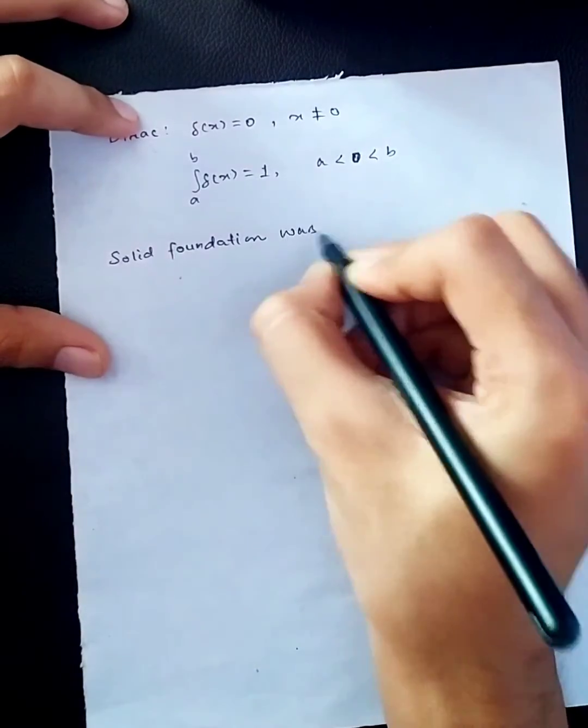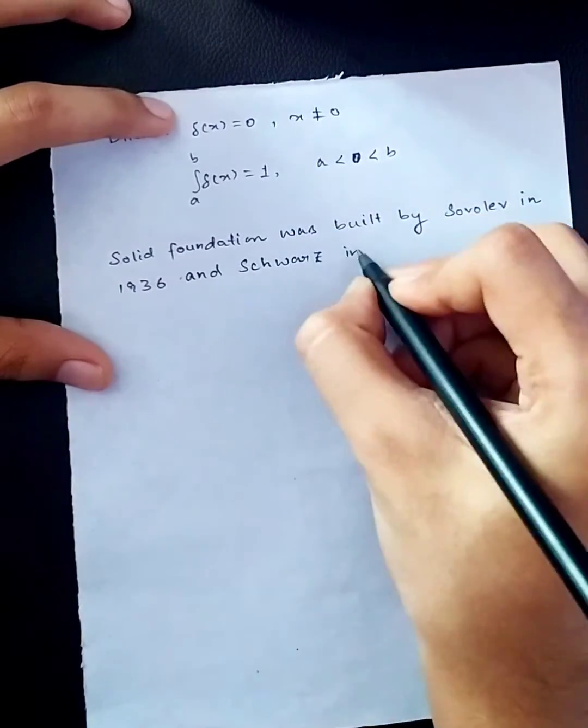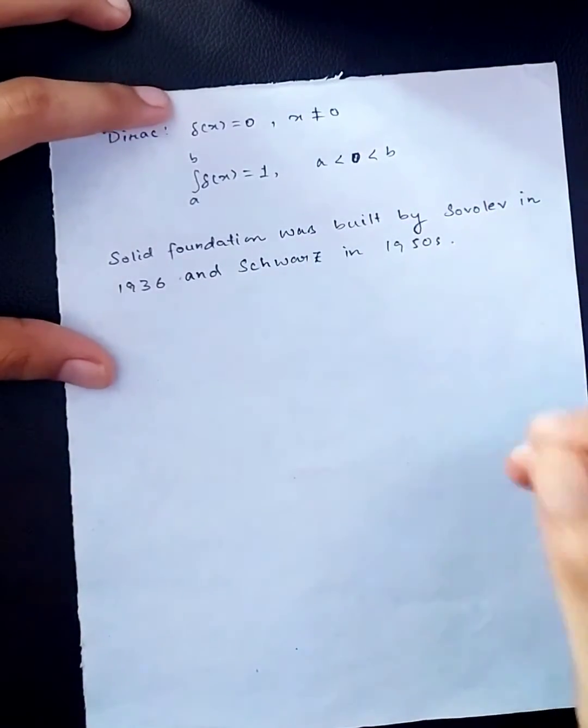A solid foundation was built by Sobolev in 1936 and Schwartz in 1950s. The theory of generalized functions that they developed can be used to replace ordinary analysis, and in many ways simpler.